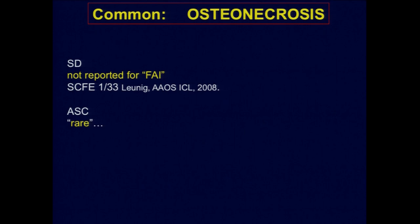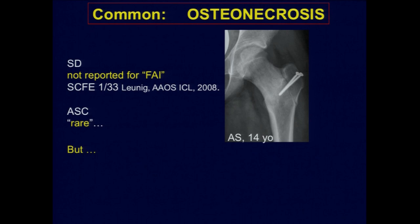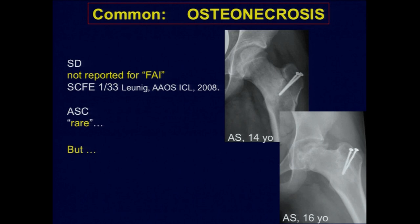Osteonecrosis — not reported for surgical dislocation of the hip. In the paper about Skiffy, Leunig reported one case, but these are the more complex cases. The more complex the corrections you do, the more risks you take. But if you stick to the technique, I think you can avoid the complications better. In arthroscopy it's rare — we have no numbers, but from time to time you see cases. This was operated by a very skilled surgeon saying this is not difficult surgery. You see the osteotomy is going into the fossa, the head is re-contoured there where you search the vessels, and this is the end result. 16 years old. Be careful — stick to the technique.